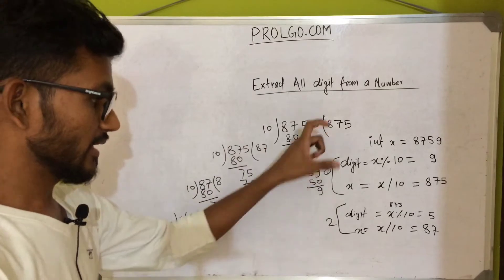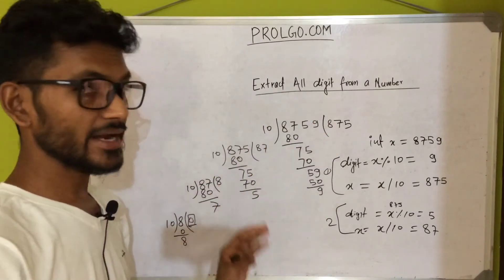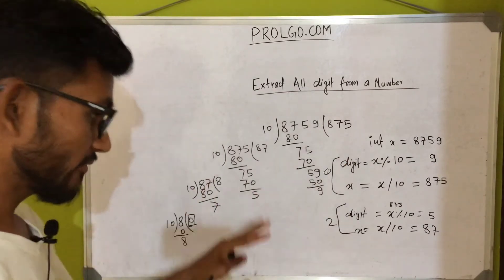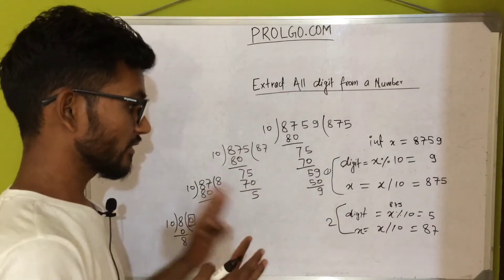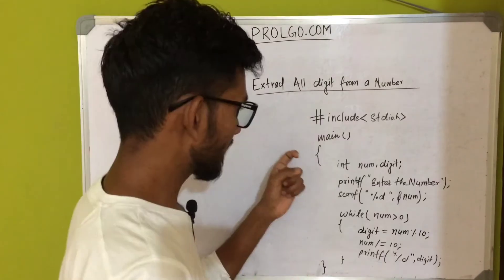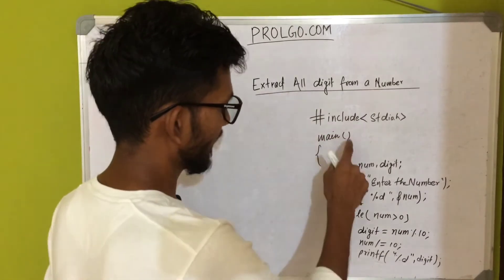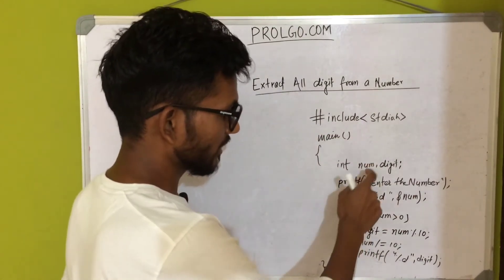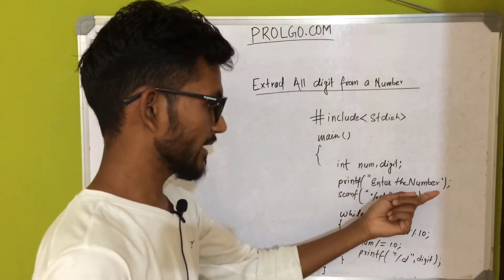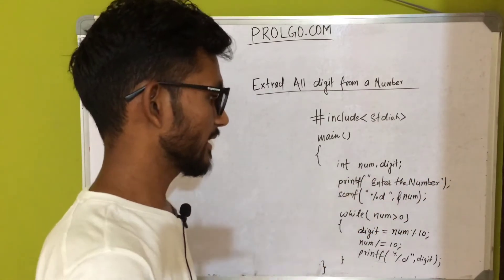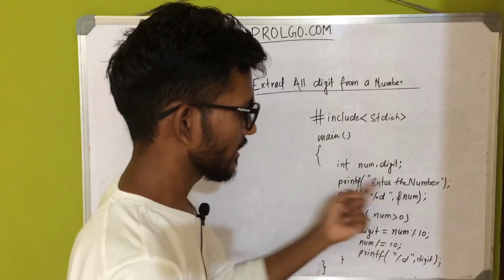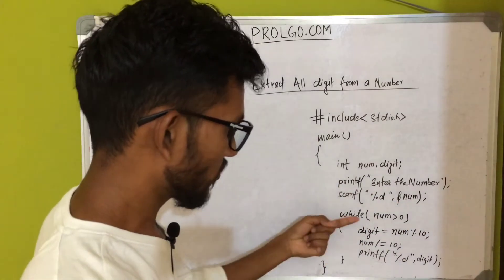Now I will write the program. Before writing, I just wanted to make you understand the logic. If your logic is clear, you can definitely write the code in your own way. We start with the standard include and main function, then declare two variables: 'number' and 'digit'. We print 'enter the number' using printf.